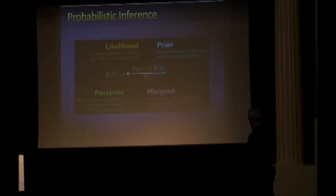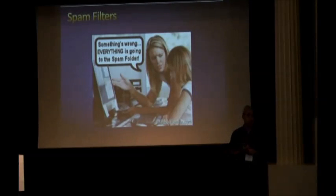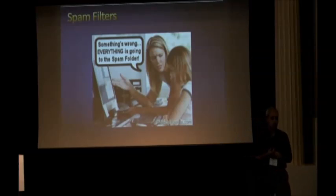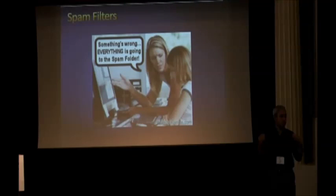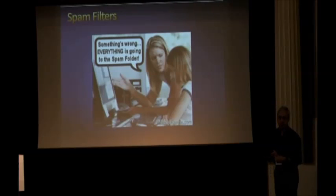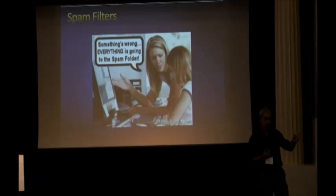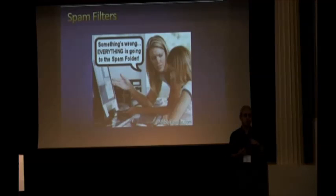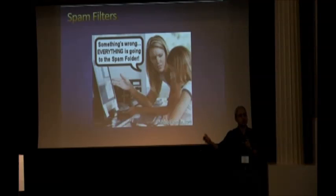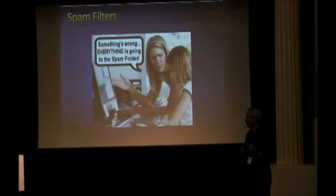Bayesian learning has been used for a lot of things, but probably one you've encountered in your daily life is spam filters. The first and still prevailing approach is Bayesian: you compute the probability that an email is spam — the hypothesis is 'is this spam or not?' and the evidence is the words in the email. If it contains the words 'Viagra,' four exclamation marks, and the word 'free' in capitals, it probably is spam. If it says 'your mom' or 'your boss,' it probably is not.